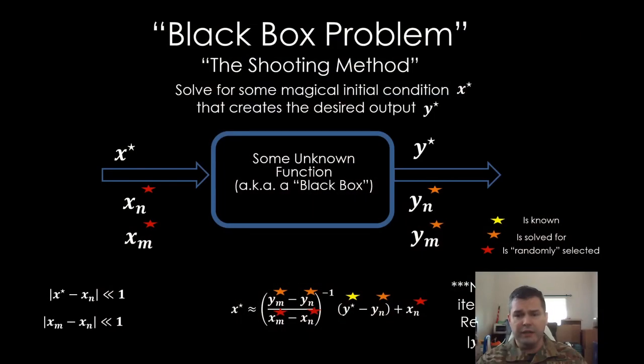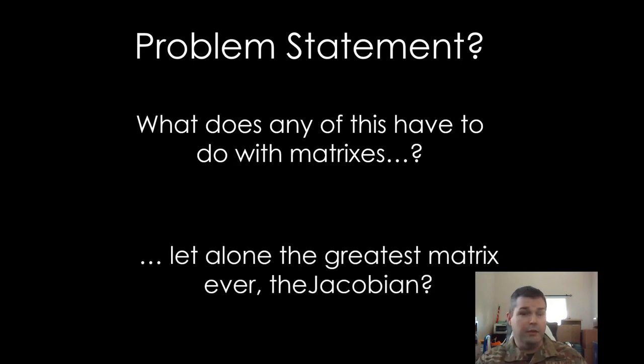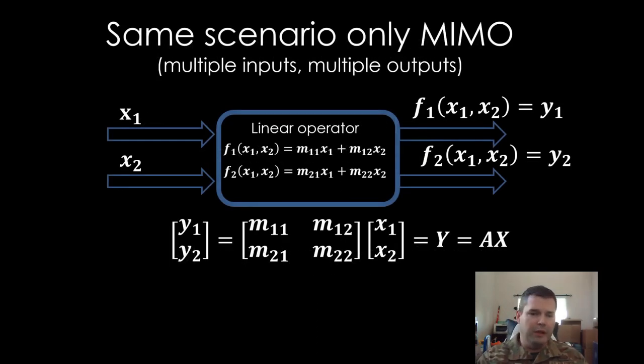So now we've gone from perfect knowledge of a perfectly linear function to somewhat knowledge of a nonlinear function to absolutely no knowledge about the function whatsoever. As long as we can give an input and get an output, we're good to proceed with this new method. So I know what you're asking yourself: Major, what does this have to do with matrices? Let alone the greatest matrix ever. And I'll tell you, that was when we had one function, one input, one function, and one output.